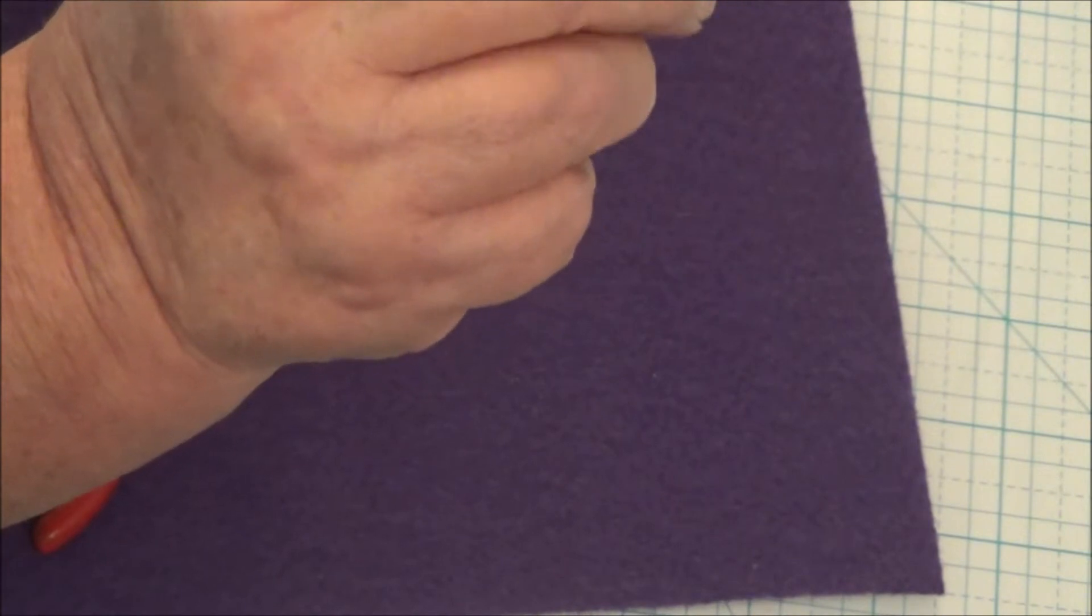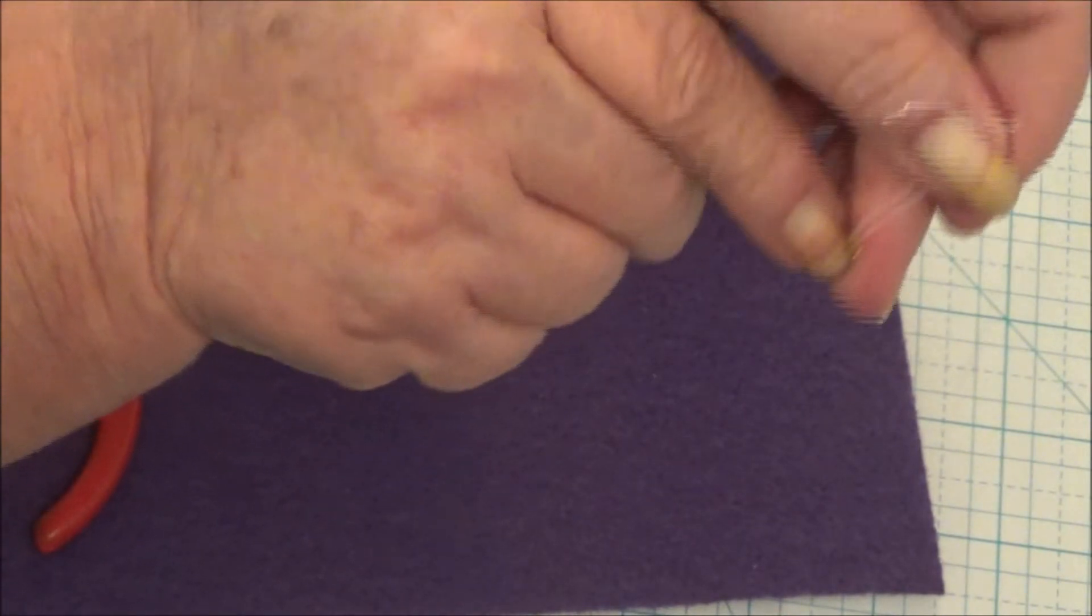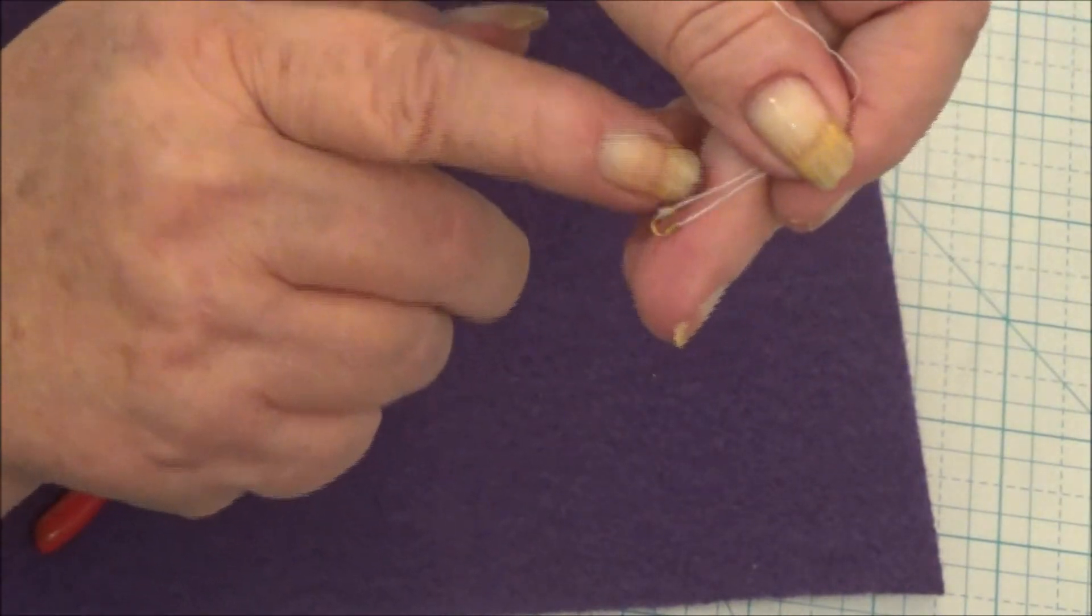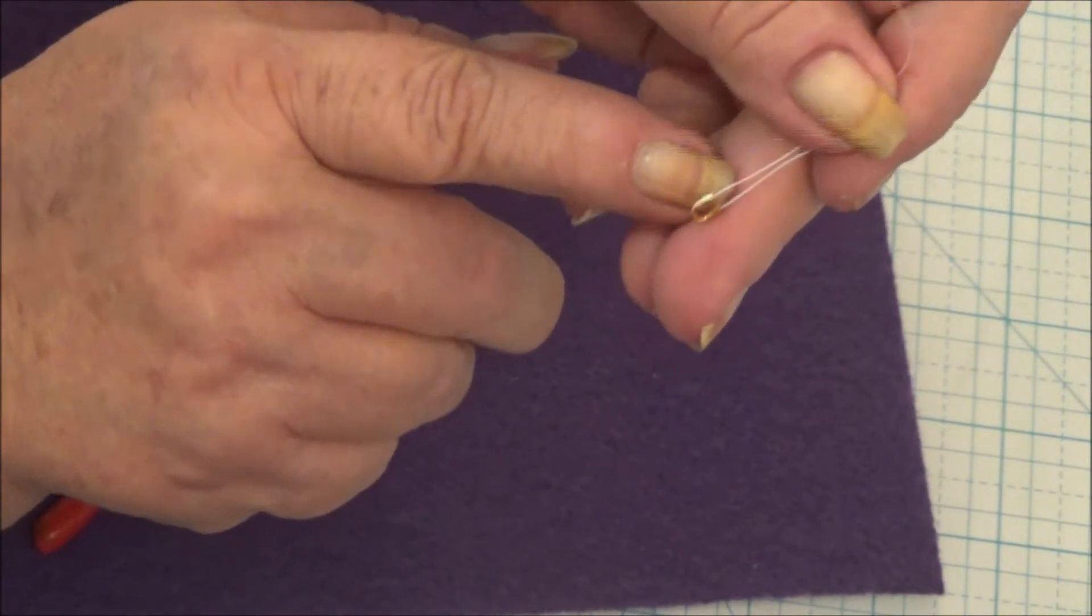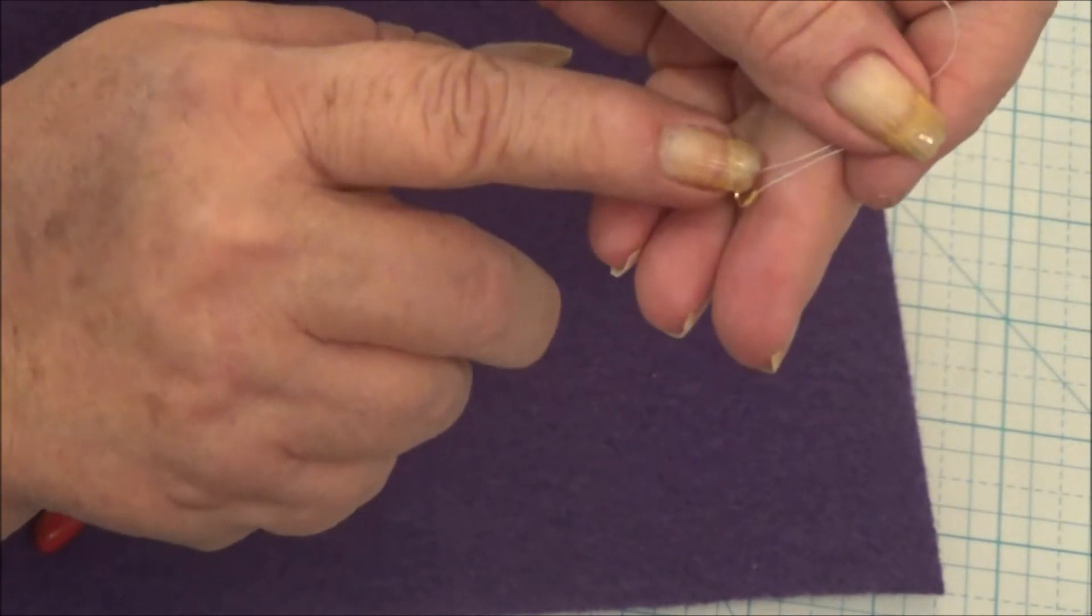And then if I was going to put on a lobster clasp or a toggle clasp, that's when I would add it on is right now. Now, when you've got your beading wire going through the crimp bead,